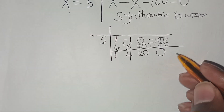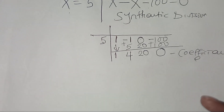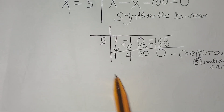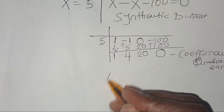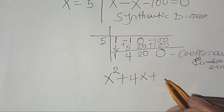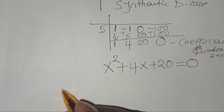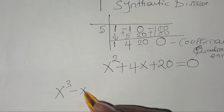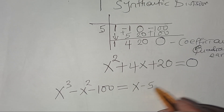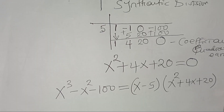These are the coefficients of the resulting quadratic equation. So the quadratic equation is x squared plus 4x plus 20, equals 0. Therefore the cubic x to the power 3, subtract x to the power 2, subtract 100 can be expressed as (x minus 5)(x squared plus 4x plus 20), equals 0.